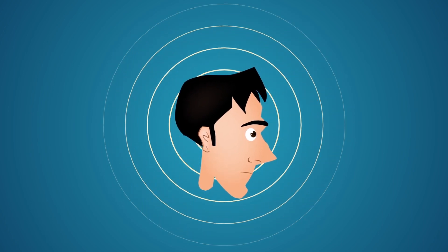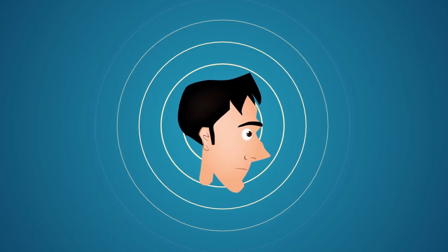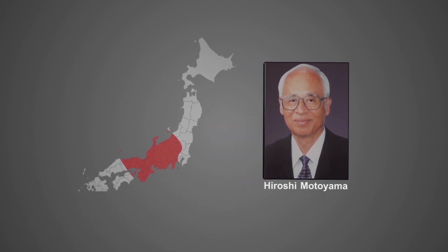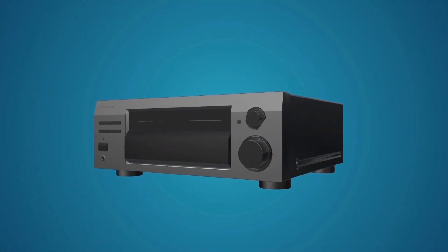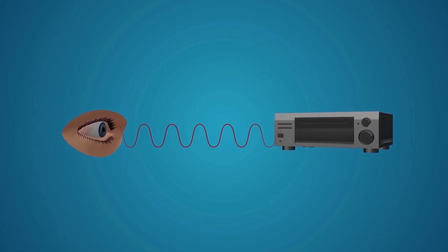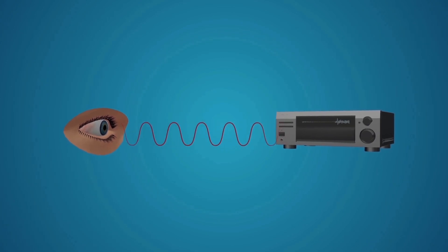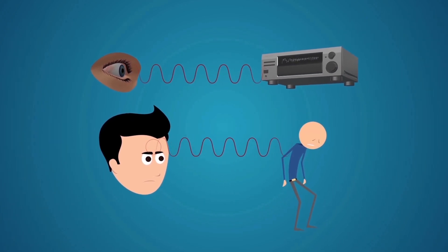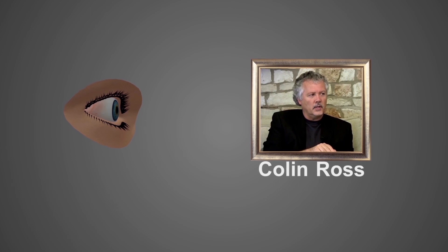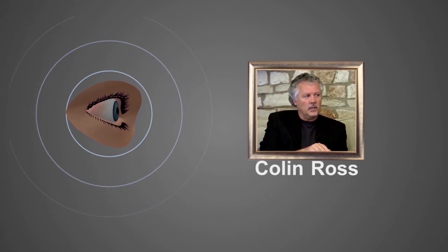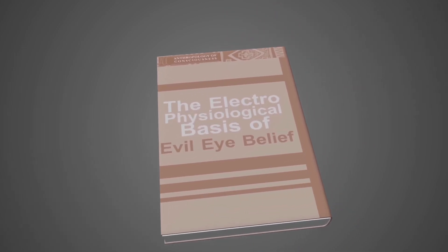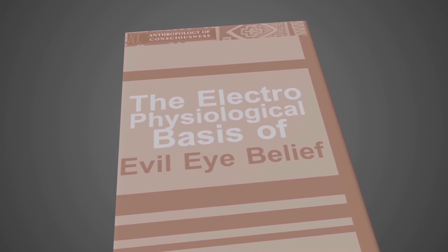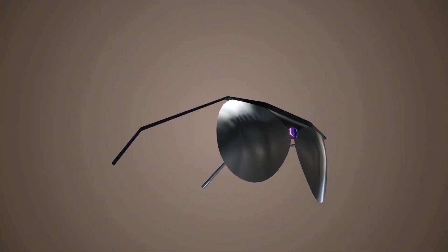أثبتت دراسات عديدة أن الطاقة الكهرومغناطيسية التي يصدرها الإنسان يمكن أن تؤثر فيما حوله. من هذه الدراسات: دراسة الدكتور هيروشي موتياما مدير معهد النفس الديني في طوكيو، الذي صمّم جهازاً دقيقاً لقياس الطاقة المنبعثة من جسد صاحب العين الضارة واستطاع تحديد بؤرة هذه الطاقة بين العينين. وأثبت الطبيب النفسي الأمريكي الدكتور كولين روس أن العين البشرية قادرة على إرسال انبعاثات كهرومغناطيسية.